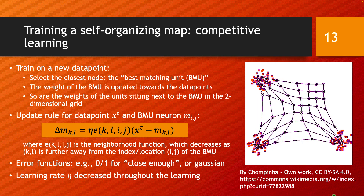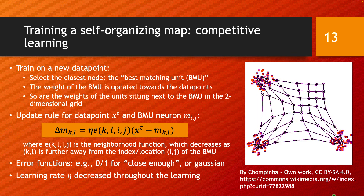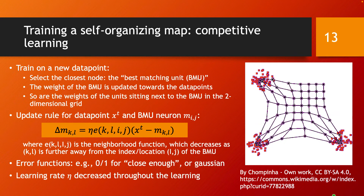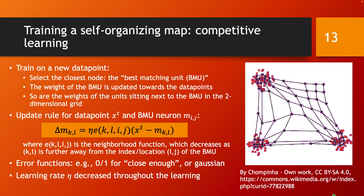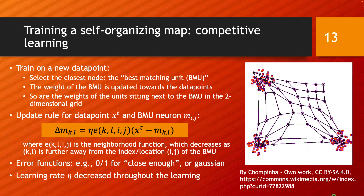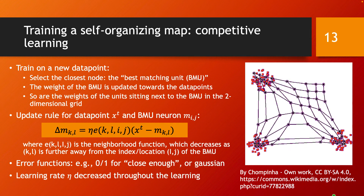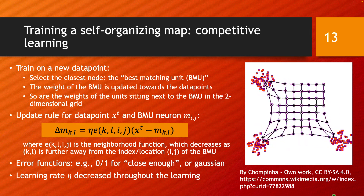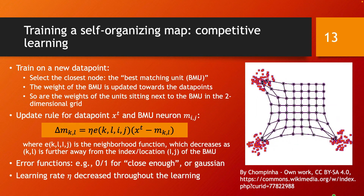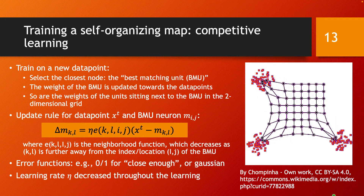The D-dimensional weight vector associated with the BMU is updated towards the new data point. Crucially, the BMU sits in a 2D topological map, so when you update the BMU's weight vector, you also update the weight vectors of units sitting next to the BMU in this 2D grid.